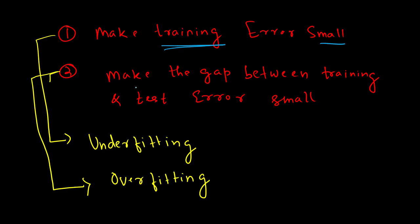The second objective is to make sure that the gap between the training and the test error is also small. We also ensure that it is as small as we possibly can have. If these two objectives are fulfilled, then we have a good model.